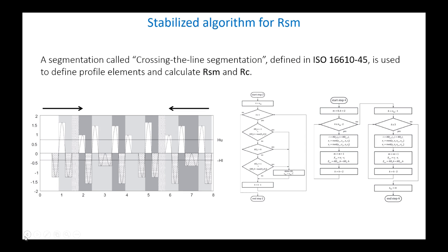The RSM parameter has undergone several updates over time in order to correct its instability and uncertainty in its definition, which made its implementation variable among different manufacturers. The new segmentation procedure, described in ISO 16610-45 and called Crossing the Line Segmentation, aims to clarify and stabilize the determination of profile elements and therefore their quantification.